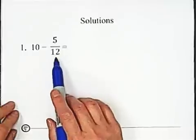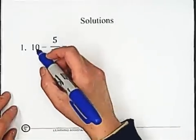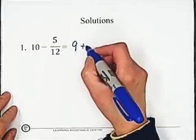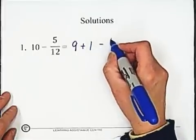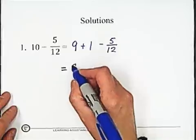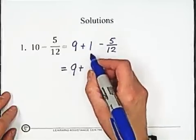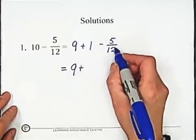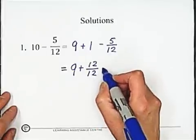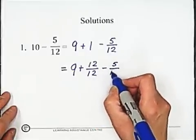10 minus 5 over 12. Let's see if it is correct. We borrow one from 10. So write 10 into 9 plus 1 minus 5 over 12. It equals convert one into an equivalent fraction with 5 over 12, which is 12 over 12.